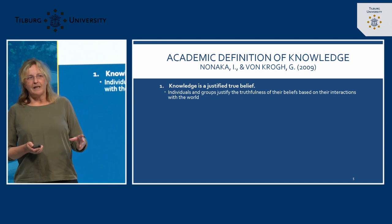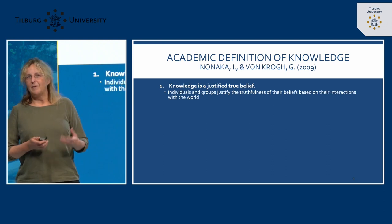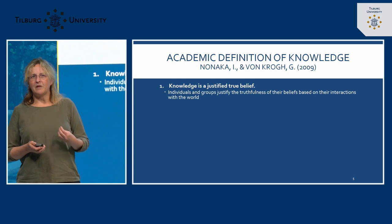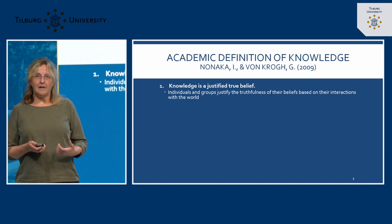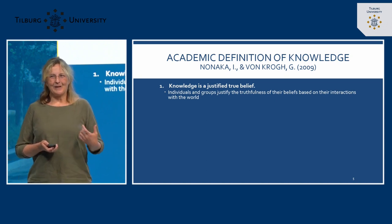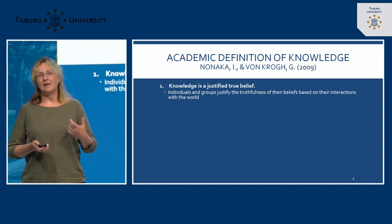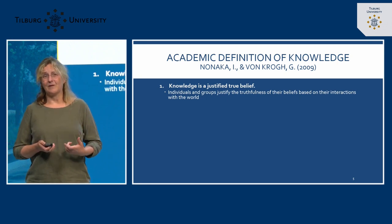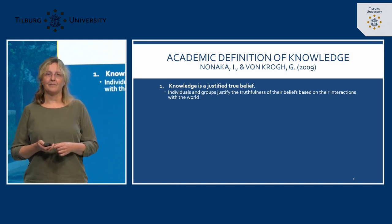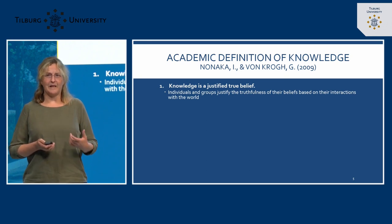If you go to the academic literature, you see that there is more made of it — it's not just using information, it's a little bit deeper. I'm going to present a well-known definition by Nonaka and Von Krogh, 2009, a nice overview article, of which the first two elements are rather philosophical, but the last one is really, really important and has a lot of practical implications. That's why it is important for you to understand this definition. The first part is that knowledge is a justified true belief.